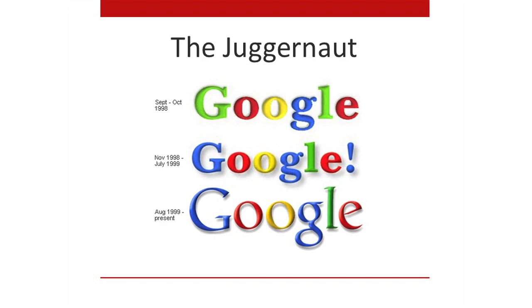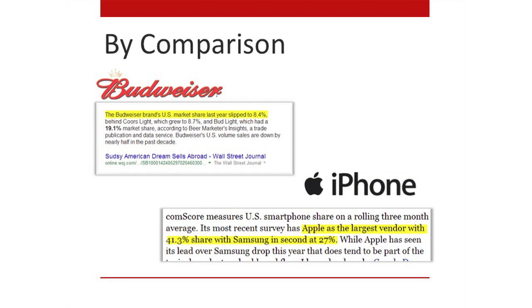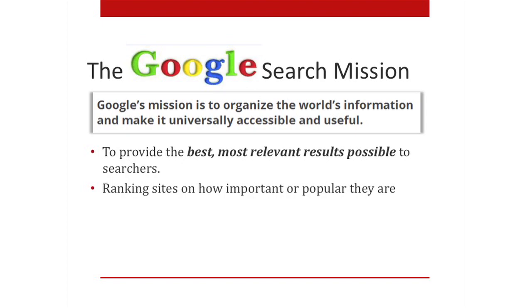Google controls 67.6% of market share for US search according to Comscore, though personally I believe that number is way higher — figures like 92%, 80%, 87%, 85% reflect what I see. By comparison, Budweiser has 8.4% market share and the iPhone only 41.3%. Since Google is so important, we should talk about their mission: to organize the world's information and make it universally accessible and useful — to provide the best, most relevant results possible to searchers.